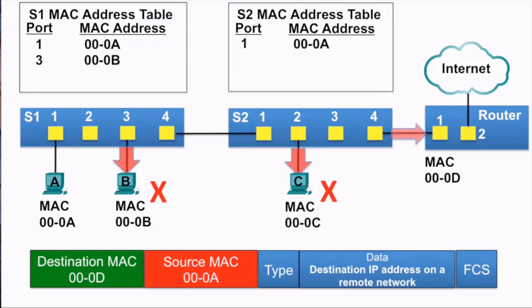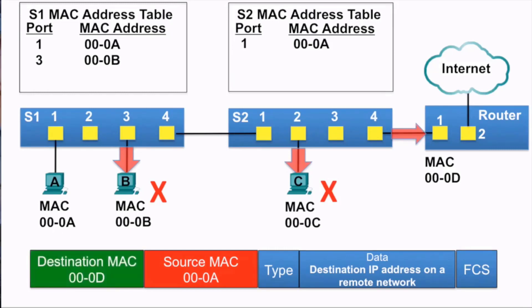The router receives the Ethernet frame, and because the destination MAC address matches its own MAC address, it accepts the rest of the frame.